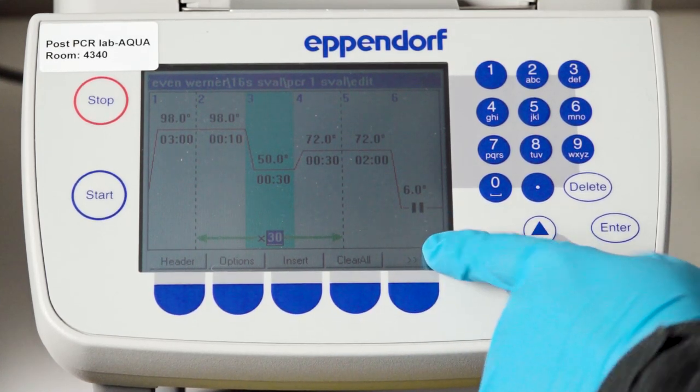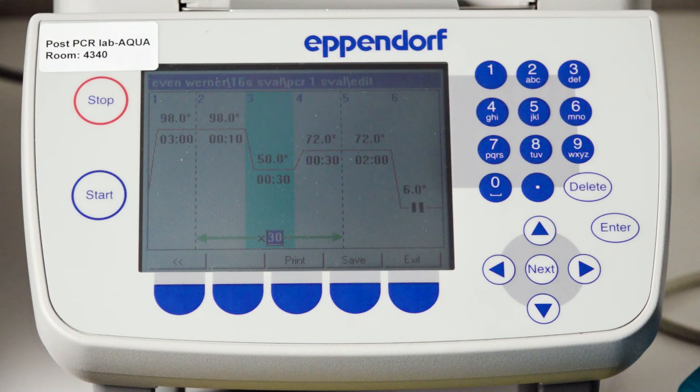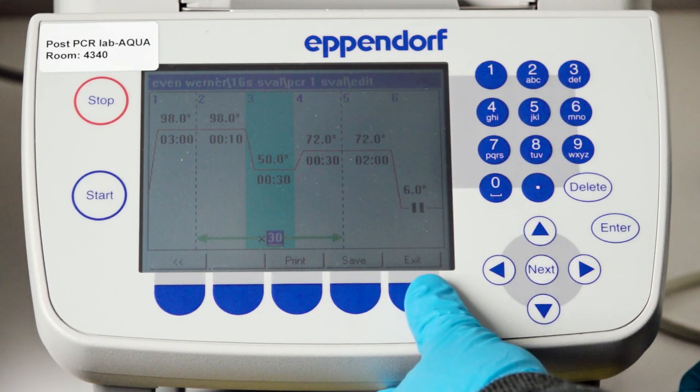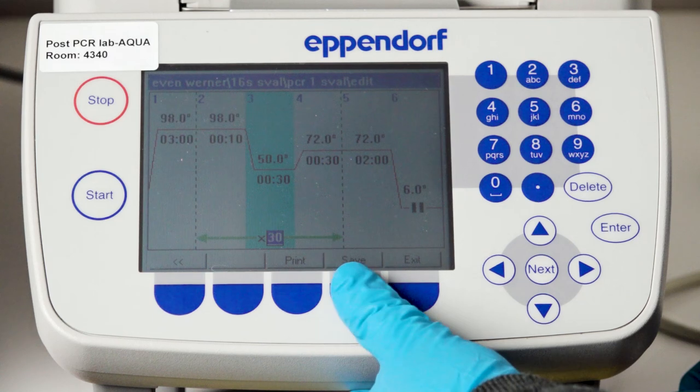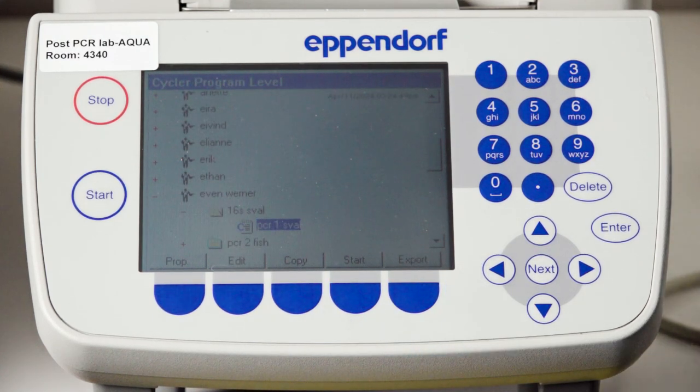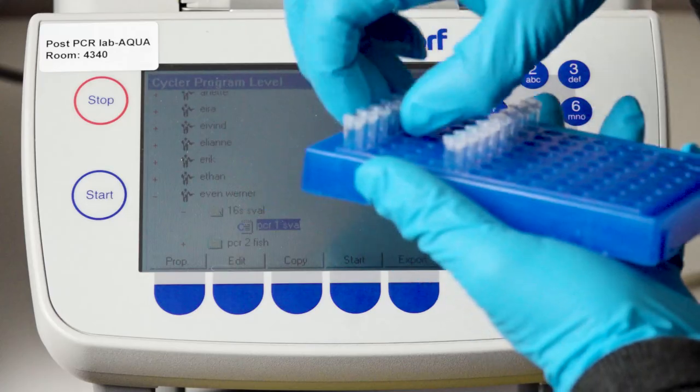This here looks all good for this program and these types of samples. So then I push the button here that corresponds to the two arrows. I haven't changed anything so I just take exit. If you change anything then you need to take save and then exit.